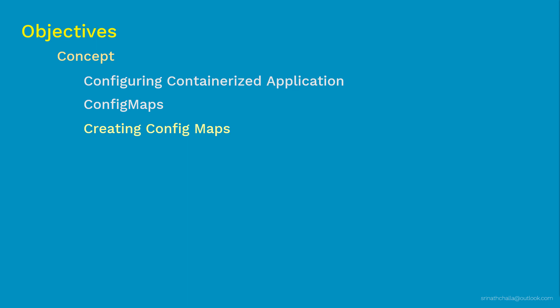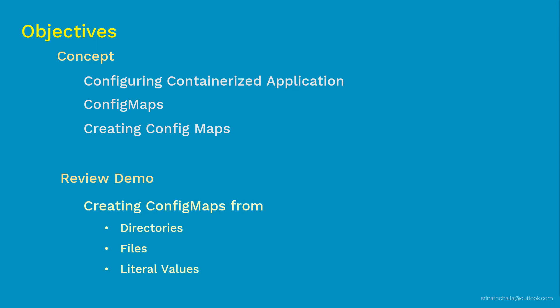Coming to part two, we'll review the demo we performed on a live Kubernetes cluster in advance. This will help you better understand when you watch it done live. In this review demo, I'll show you how to create ConfigMaps using directories, files, and literal values. If you are looking for the actual demo on a live Kubernetes cluster, refer to the link in the description below. Now let's get started with how configuration is managed for containerized apps.